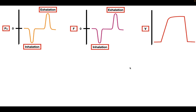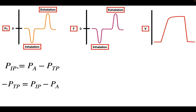Now let's look at the transpulmonary pressure and the intrapleural pressure and see how they change over the course of breathing. We're going to bring in our equation and rearrange it to solve for the negative of the transpulmonary pressure. The reason we use this equation is that if the alveolar pressure is zero, the negative of the transpulmonary pressure will be equal to the intrapleural pressure.